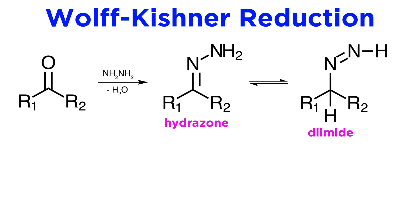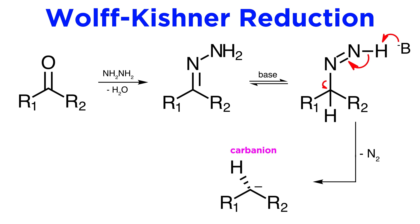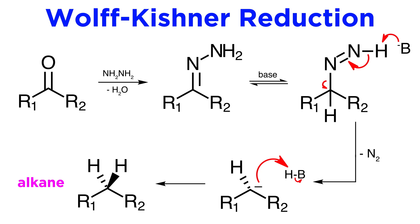Hydrazones are in equilibrium with a tautomeric form, the diimide, and this equilibration is catalyzed by base. Notice the additional proton on this carbon in the diimide tautomer, as well as the double bond between the nitrogens. Then the slow step for this reaction is the deprotonation of the diimide by the strong base. This leads to loss of nitrogen gas and the formation of a carbanion, which is an especially reactive species. The lifetime of a carbanion in a protic solvent is extremely short, and protonation by the conjugate acid of the base used in the previous step leads directly to the alkane.